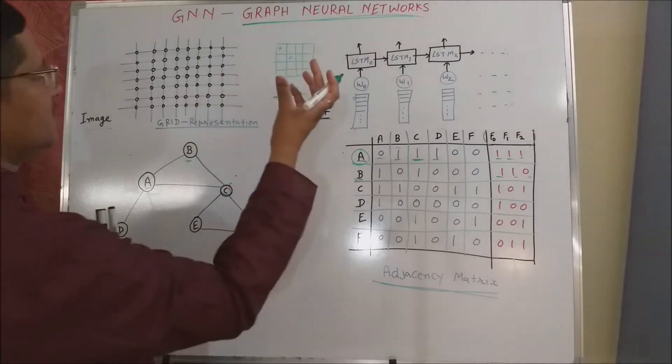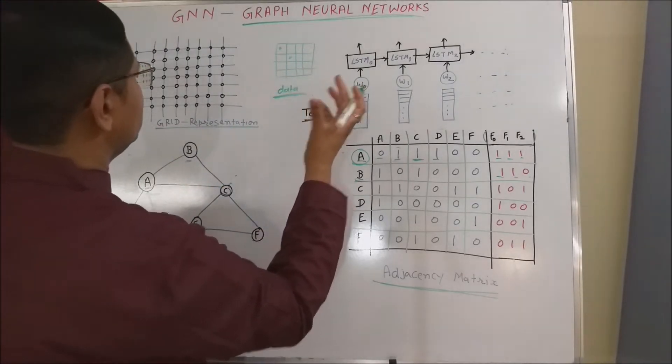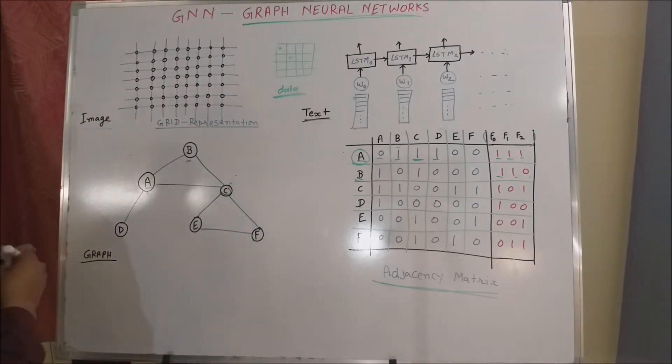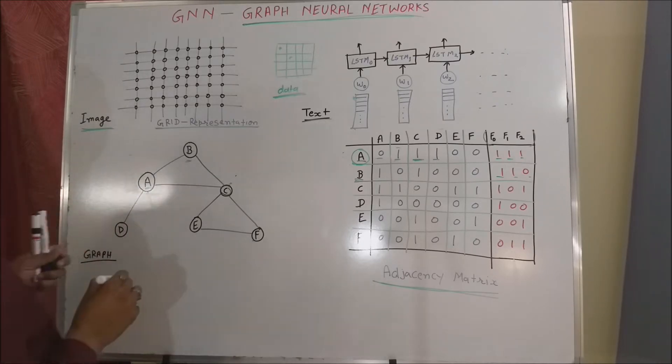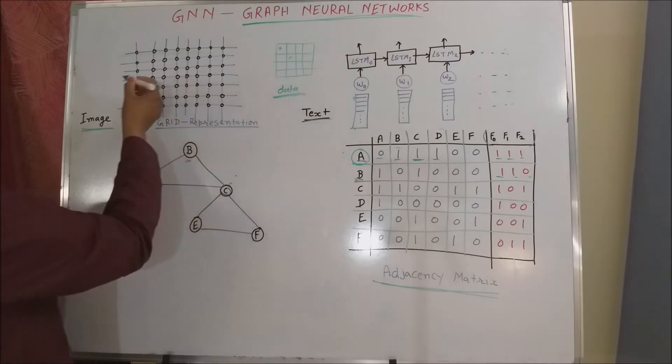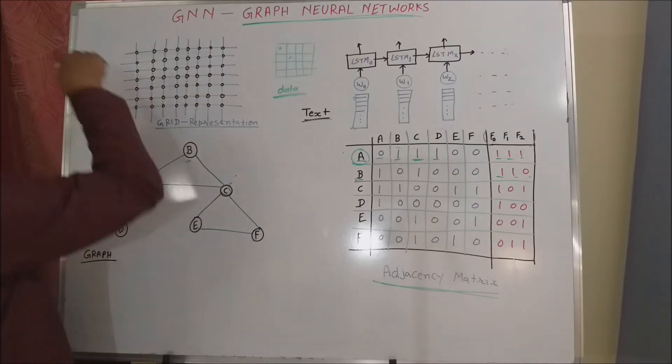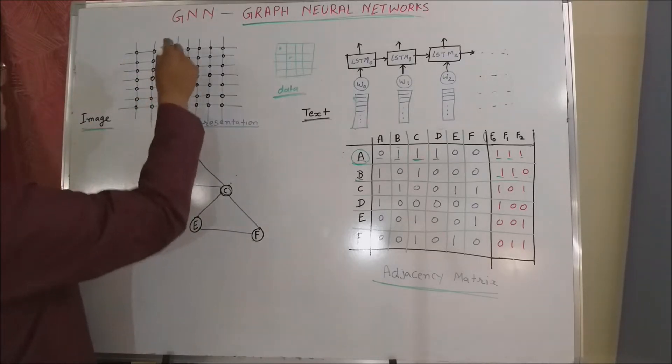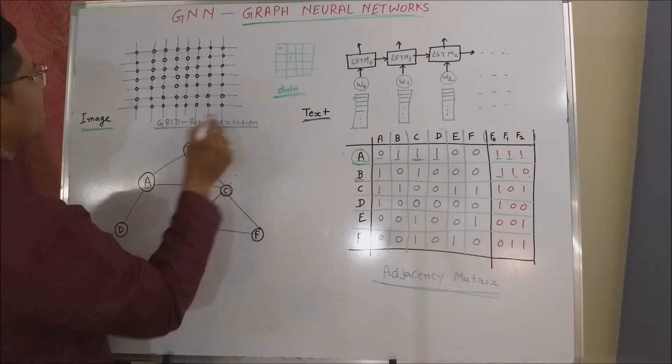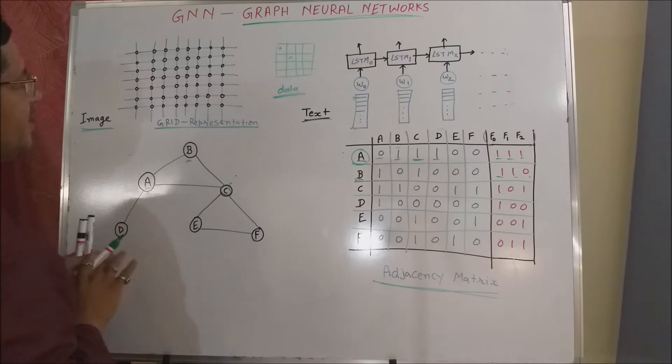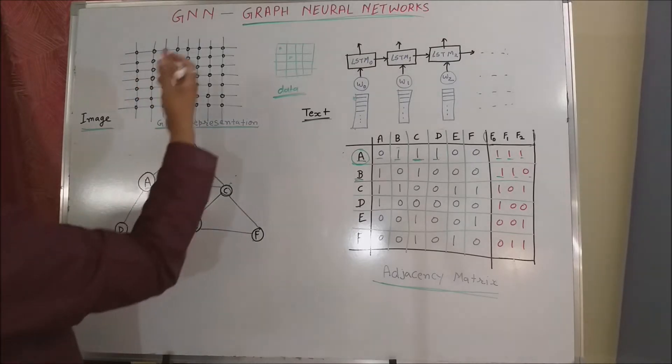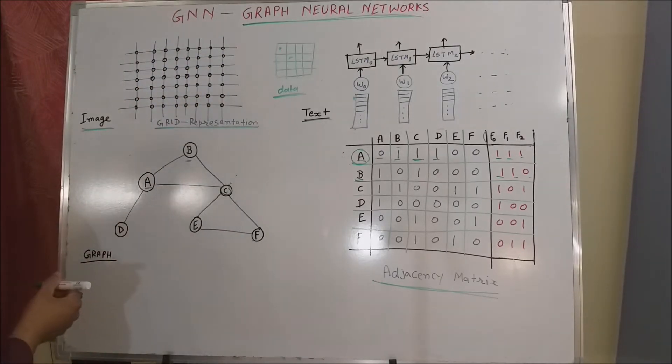If you go through the traditional neural network architecture, for example, suppose how to handle the image data, then you will realize that first of all, we convert the image pixels into grid. And this is called grid representation. The grid representations may be binary grid representations, or we can use some numerical values with grid representations.